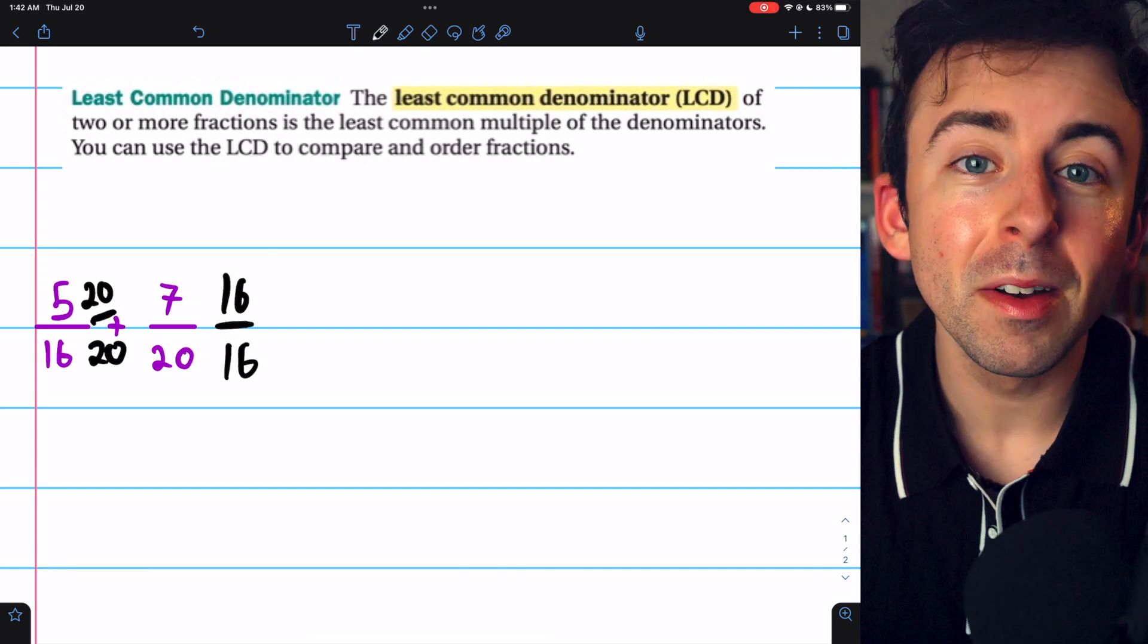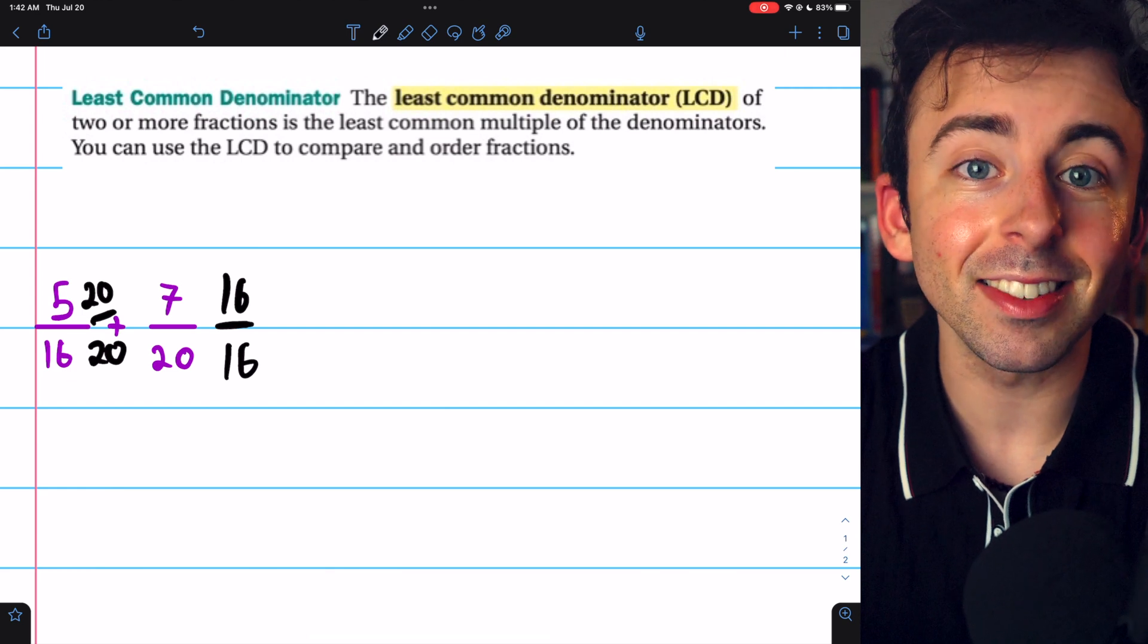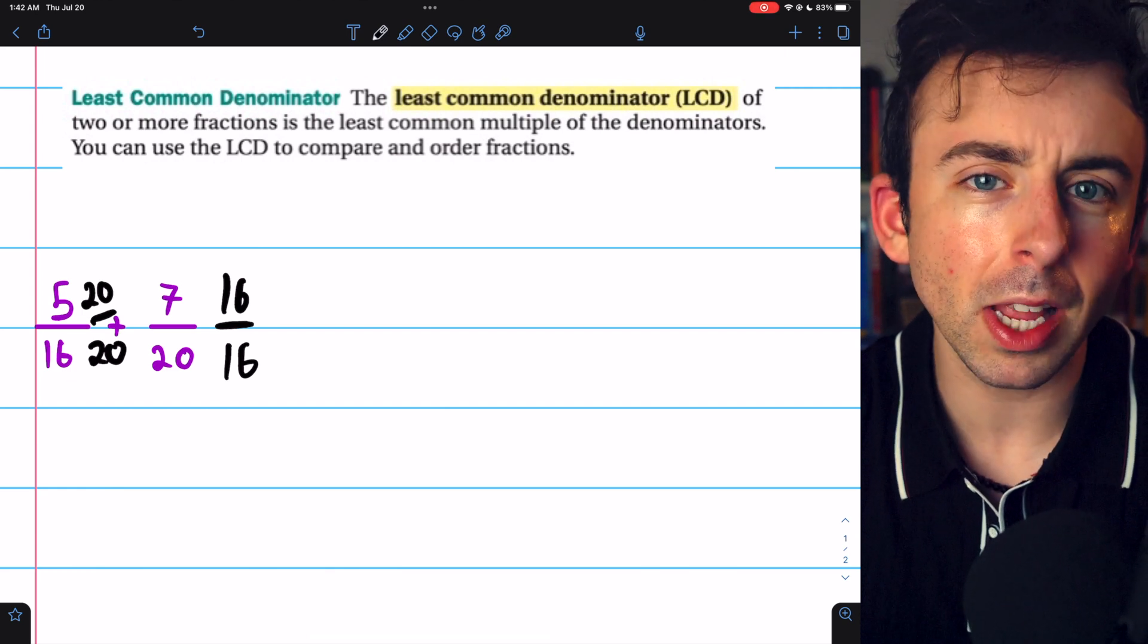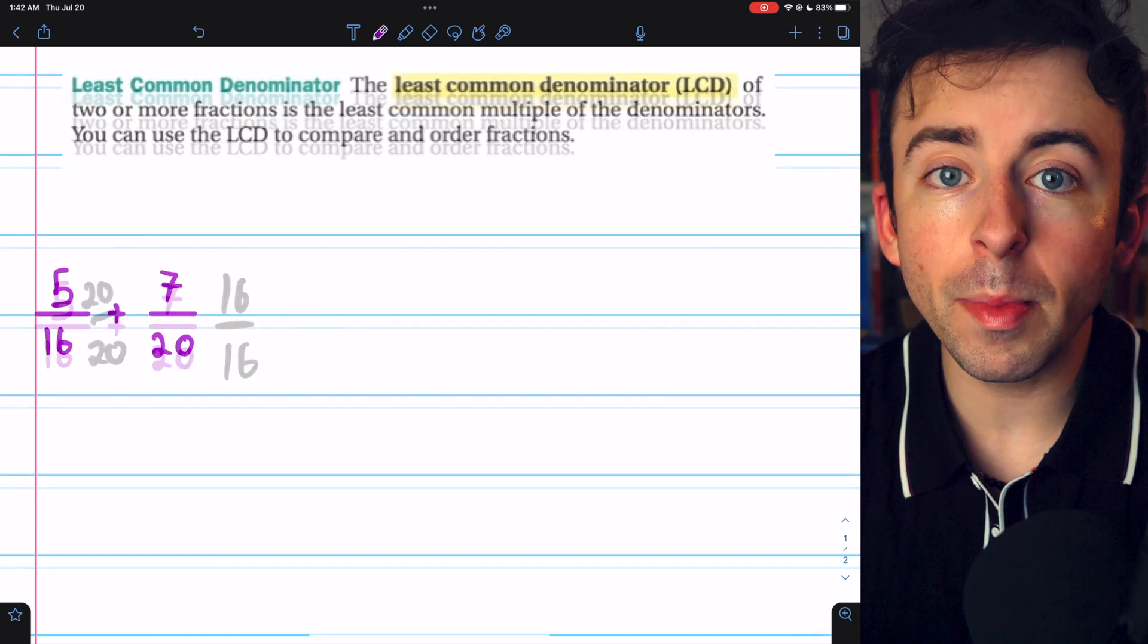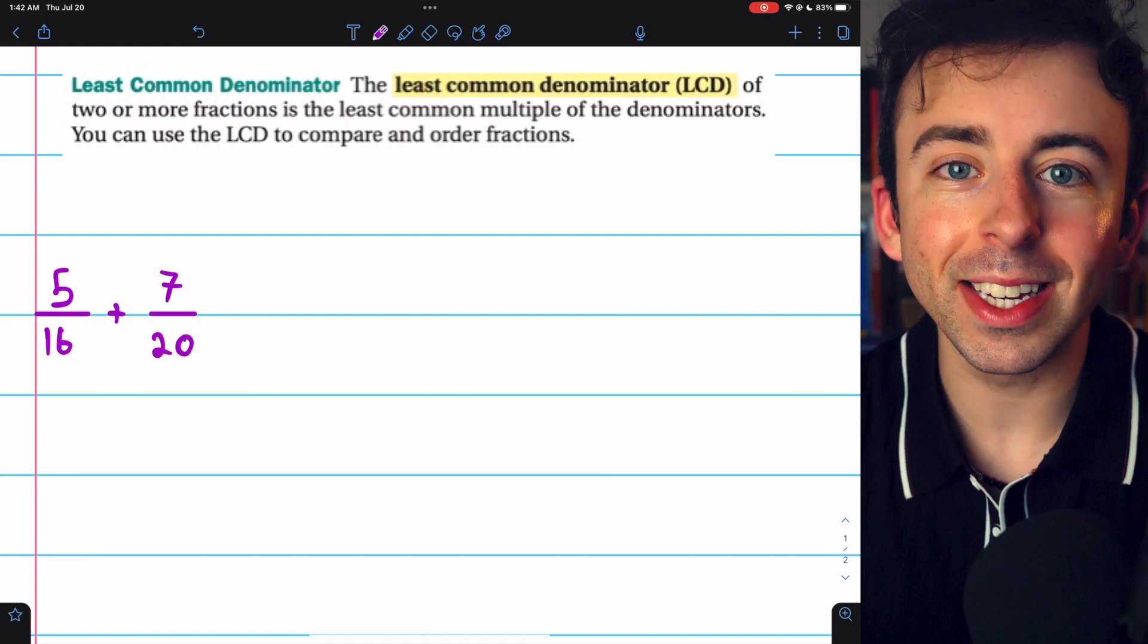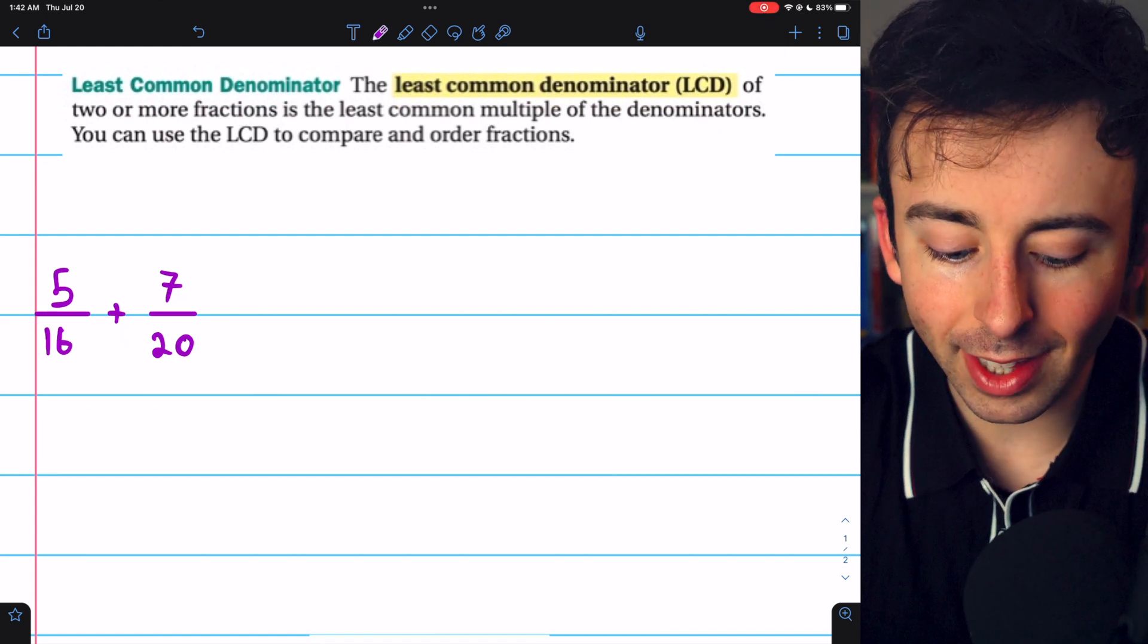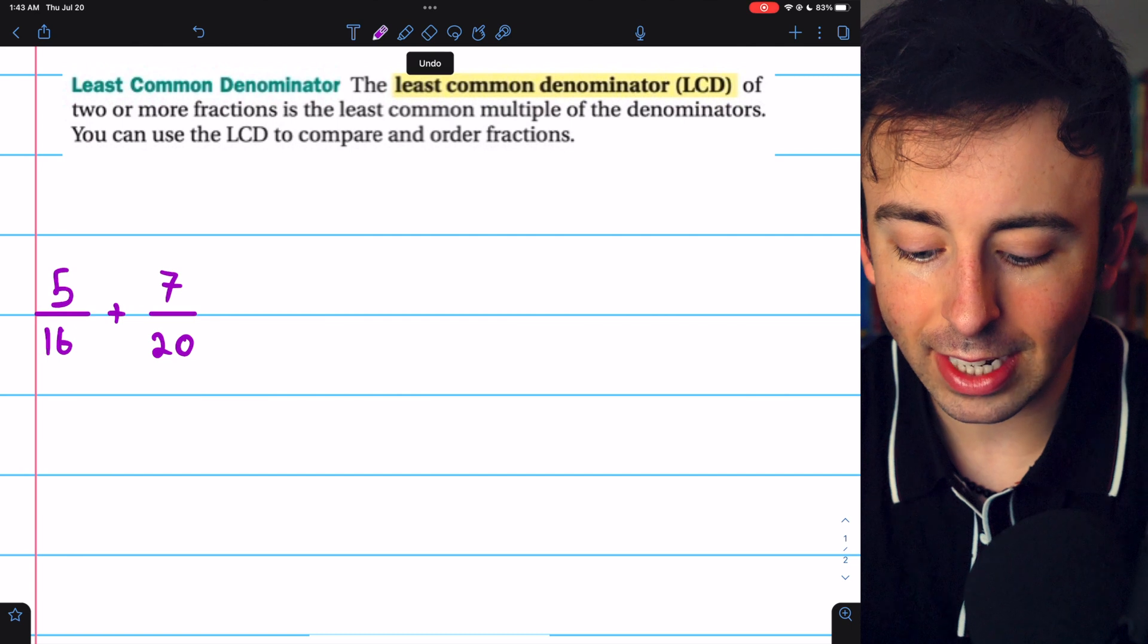We could multiply 20 over 20 on the left and multiply by 16 over 16 on the right. That type of thing always works, but it's not always going to give you the least common denominator. And sometimes that might be what you want. So to make sure we use the least common denominator, let's try finding the least common multiple of 16 and 20.